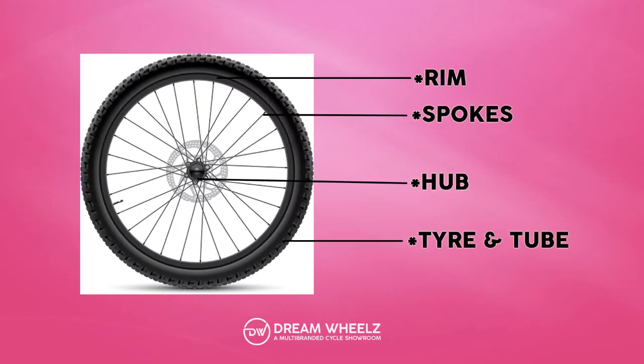The bicycle wheel is a combination of rim, spokes, hub, tyre, and tube.